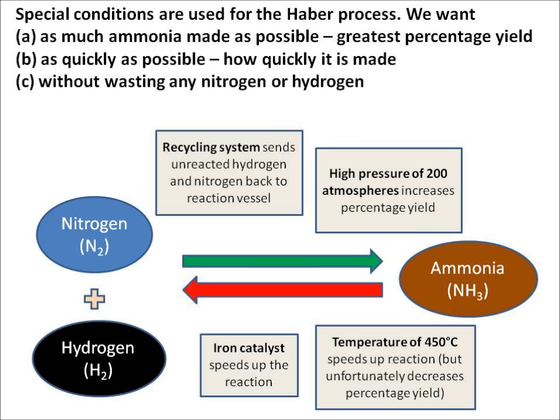We have a recycling system, which means any unreacted hydrogen and nitrogen goes back into the reaction vessel. We choose a high pressure of 200 atmospheres - that increases the percentage yield. We use an iron catalyst, which speeds up the reaction. And we choose a high-ish temperature of 450 degrees centigrade. A high temperature means the reaction is sped up, but unfortunately the flip side is the percentage yield isn't as much as it could be.